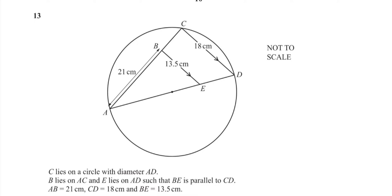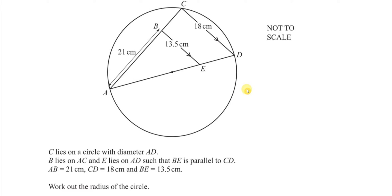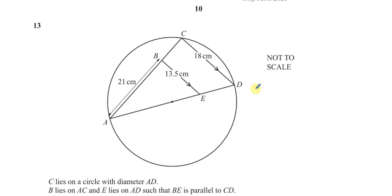Okay, so now here we have a situation where we need to find the radius of the circle, so let me call this point O, the center of the circle. So we need to find the length of OA, and I know the length of OA is the radius of the circle, so that's going to be half of AD. So if I can find what AD is, half of that will be OA. Okay, so I'm going to focus on finding the length of AD.